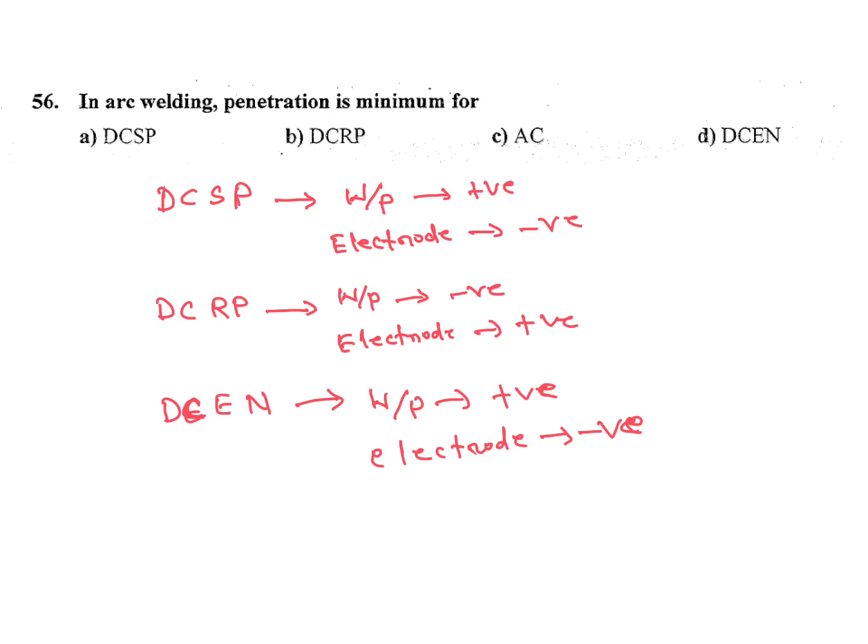First DCSP direct current straight polarity, here more penetration but less deposition. Both A and D same, more penetration and less deposition.